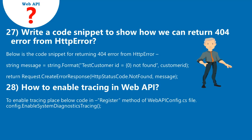Question 28: How to enable tracing in Web API? To enable tracing, place the below code in the Register method of WebApiConfig.cs file: config.EnableSystemDiagnosticsTracing().